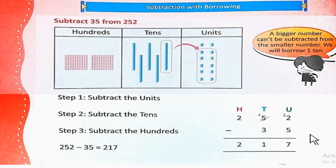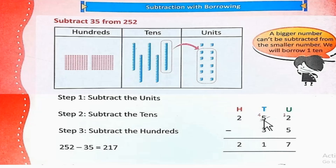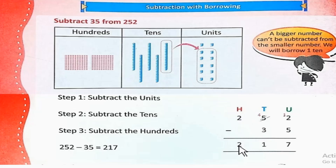152 minus 35. Step 1: Subtract. Step 2: 5 को minus करना है। हम 10 borrow करेंगे — यहाँ 5 tens हैं, जब हम 1 ten borrow करेंगे तो यह 4 रह जाएंगे। 1 ten यहाँ जाएगा तो यह 12 हो जाएंगे। 12 से 5 minus करें तो 7। 4 से 3 minus करें तो 1। 2 से कुछ भी minus नहीं करना तो 2।